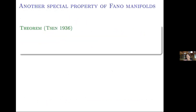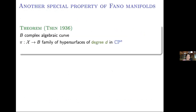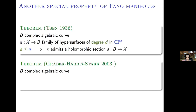Let me discuss another special property of Fano manifolds, which has to do with what is today known as Senn's theorem. Senn's theorem says: given any complex algebraic curve B and any family of hypersurfaces of degree d in P^N, if the degree of the hypersurfaces is less than or equal to N, then the family admits a holomorphic section. This is a property of hypersurfaces of low degree which can be generalized for Fano manifolds in general, or even more for rationally connected varieties.